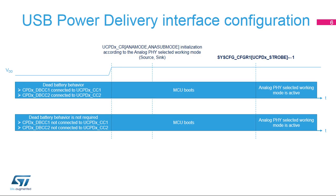The USB power delivery interfaces must be configured early in the boot program. Two timing diagrams are represented; the only difference between them is the initial configuration before power arrives — dead battery behavior required or not. The boot program initializes the ANA mode and ANA sub-mode fields in the UCPD control register, typically as a source or sink. However, this configuration becomes active only when the UCPD strobe bit is set in the SYSCFG CFGR1 register.